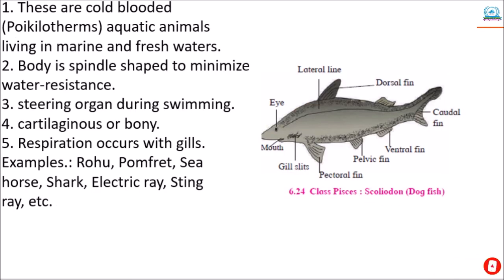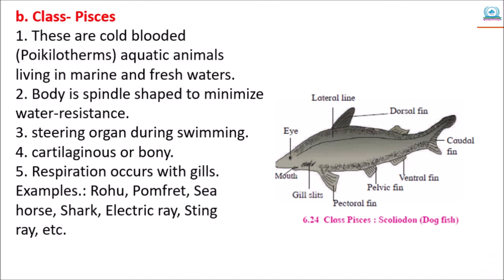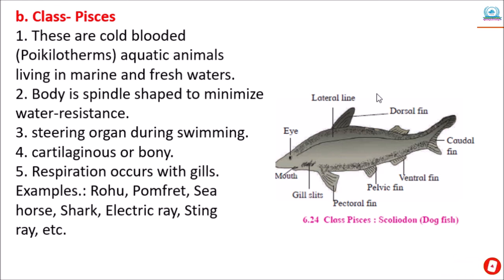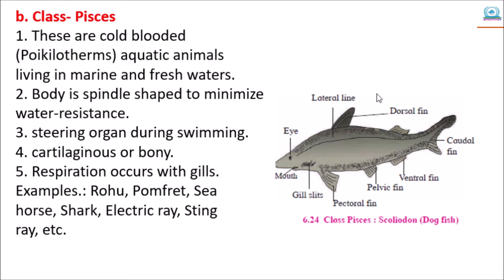Next class: Pisces — all fish are included in this class. These are cold-blooded or poikilotherms, aquatic animals living in marine and freshwater. The body is spindle-shaped to minimize water resistance — spindle-shaped means both ends become tapered. They have paired and unpaired fins for swimming. The tail fin is useful as a steering organ during swimming, making it easy to change direction. Exoskeleton is in the form of scales, and endoskeleton is either cartilaginous or bony. Respiration occurs through gills. Examples: rohu, pomfret, seahorse, shark, electric ray, stingray, etc.